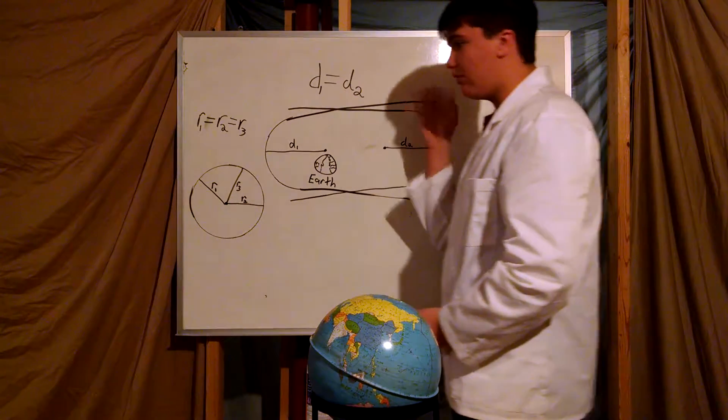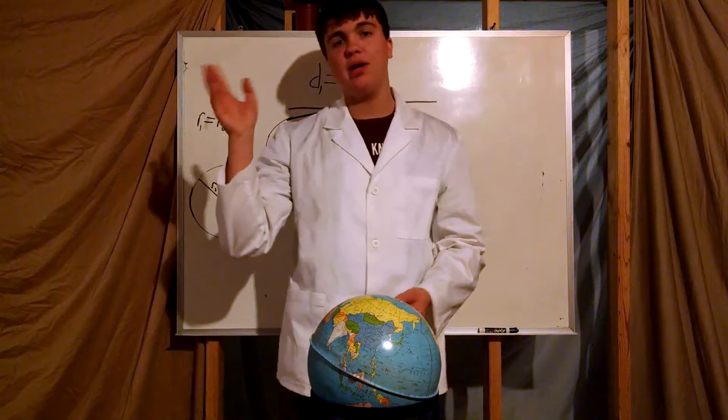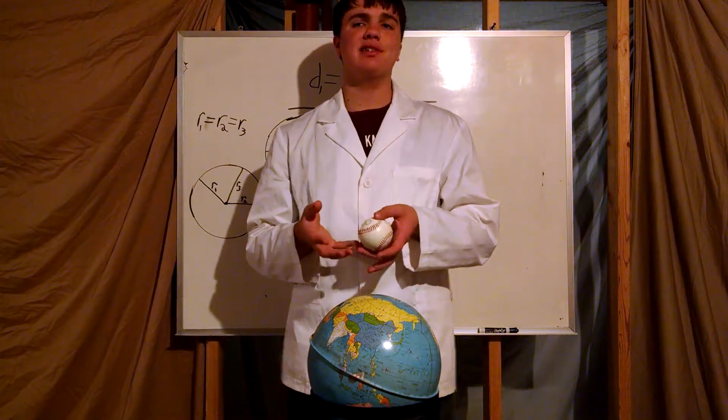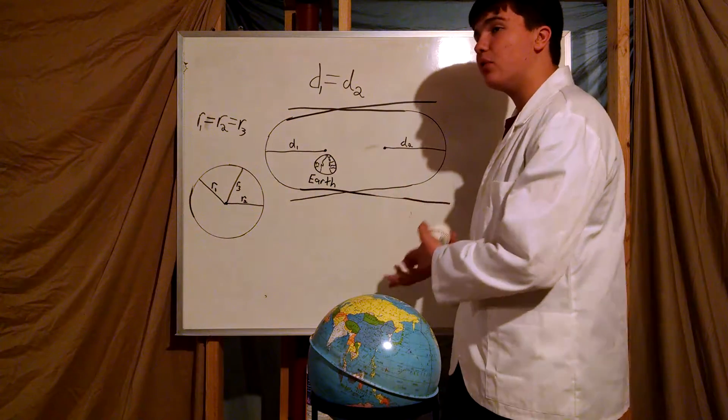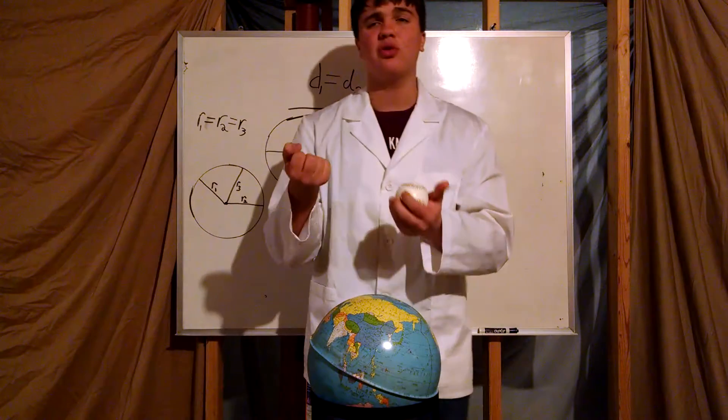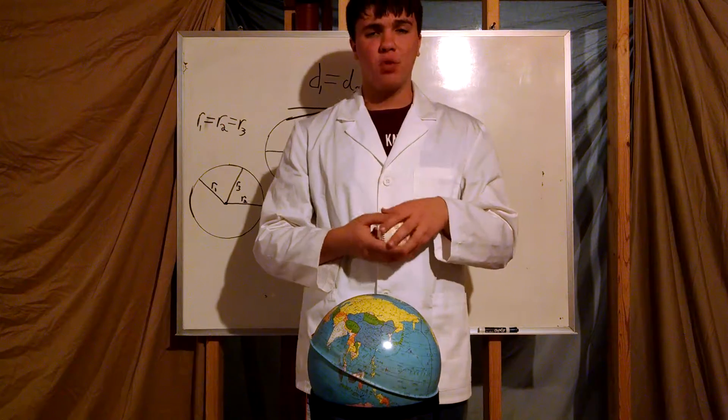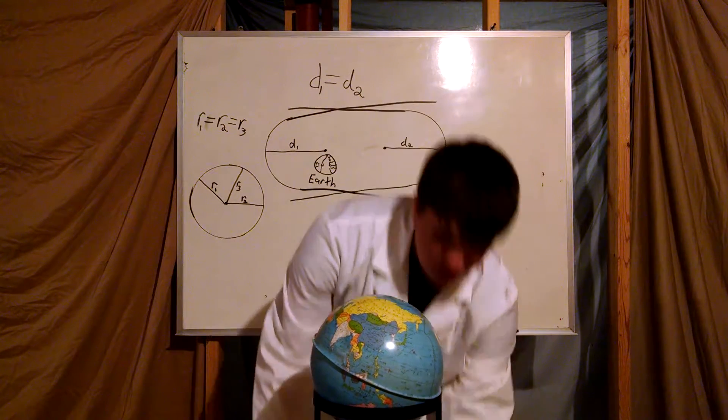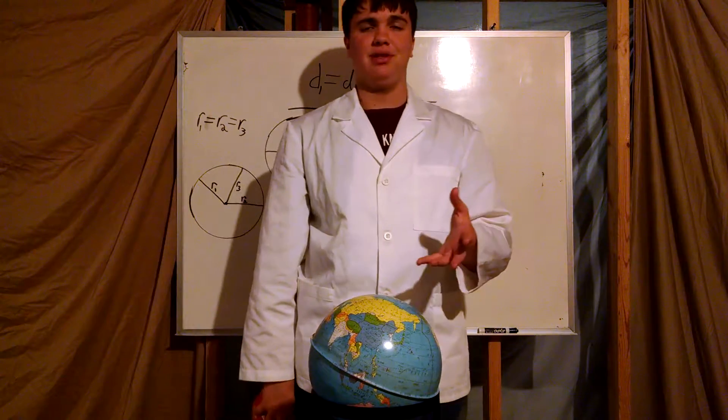But that's all complicated math and way over my head and way over a lot of people's heads. But what caused the moon to have such irregular orbit? Why can't it just have a circle? We have to go back 4.5 billion years ago. The Earth was only a few hundred million years old.